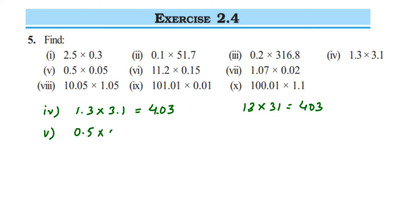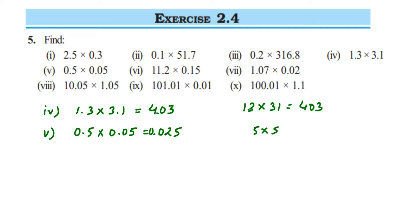The fifth question is 0.5 multiplied by 0.05. The zeros don't add value here, so just multiply 5 and 5, which is 25. After the decimal in the first number we have one digit; after the decimal in the second number we have two digits. So 1 plus 2 equals 3 — we need to place the decimal after 3 digits from the right. We only have two digits, so we add one zero: giving 0.025.